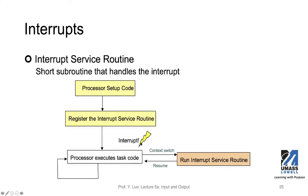Regardless, once an interrupt happens, the processor will perform a context switch. It will finish the very last instruction it's currently executing, then start the context switch. The processor will set its program counter to the ISR entry point, and the next instruction executed will be the first instruction from the ISR. You can have program logic within the ISR, but you should not have a very long subroutine that will take extended time.